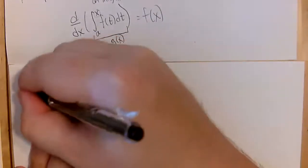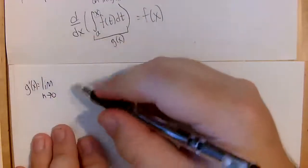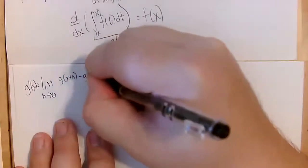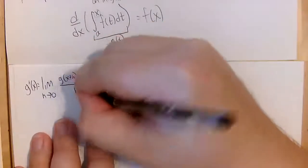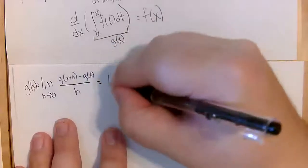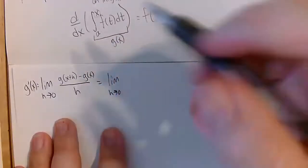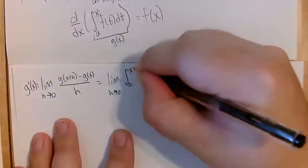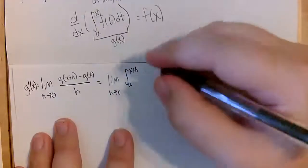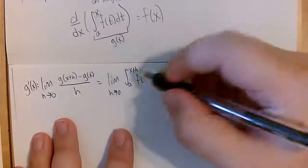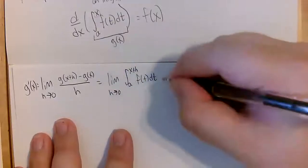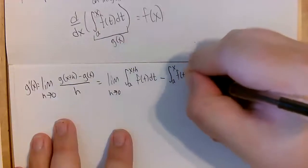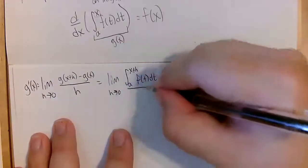The derivative of g is the limit as h goes to zero of g of x plus h minus g of x, divided by h. If g of x is the integral from a to x of f of t dt, then g of x plus h is the same thing with x plus h as the upper bound. So we have the integral from a to x plus h minus the integral from a to x, divided by h.